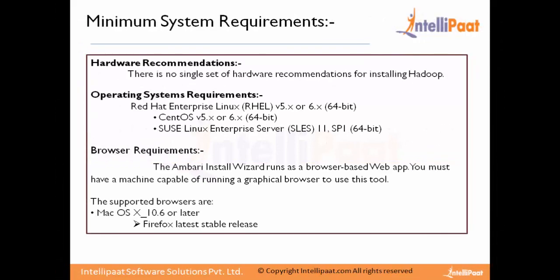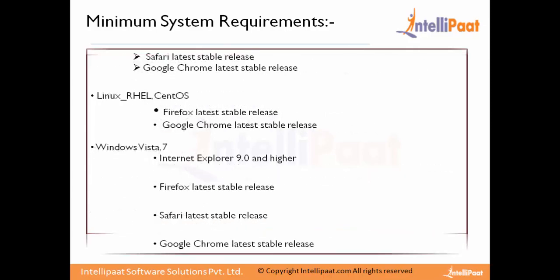For hardware requirements, there is no single fixed set — Ambari uses 64-bit systems. Supported OS examples include SUSE, Red Hat 6 and 7, and CentOS 5, 6, and 7. Since Ambari is a web GUI-based tool, browser requirements are important. On Mac OS X you can use the latest stable version of Firefox. On Linux you can use Firefox or Chrome, and on Windows you can use Internet Explorer 9, 10, or 11, Firefox latest stable release, Safari, or Google Chrome stable version.